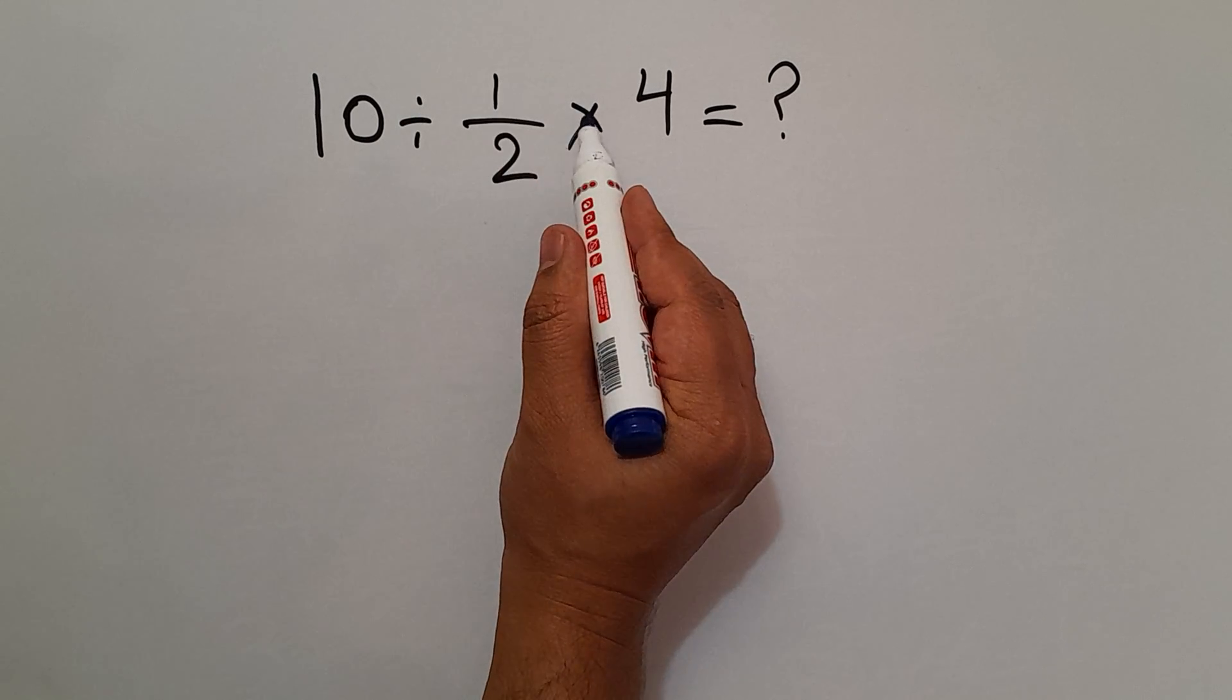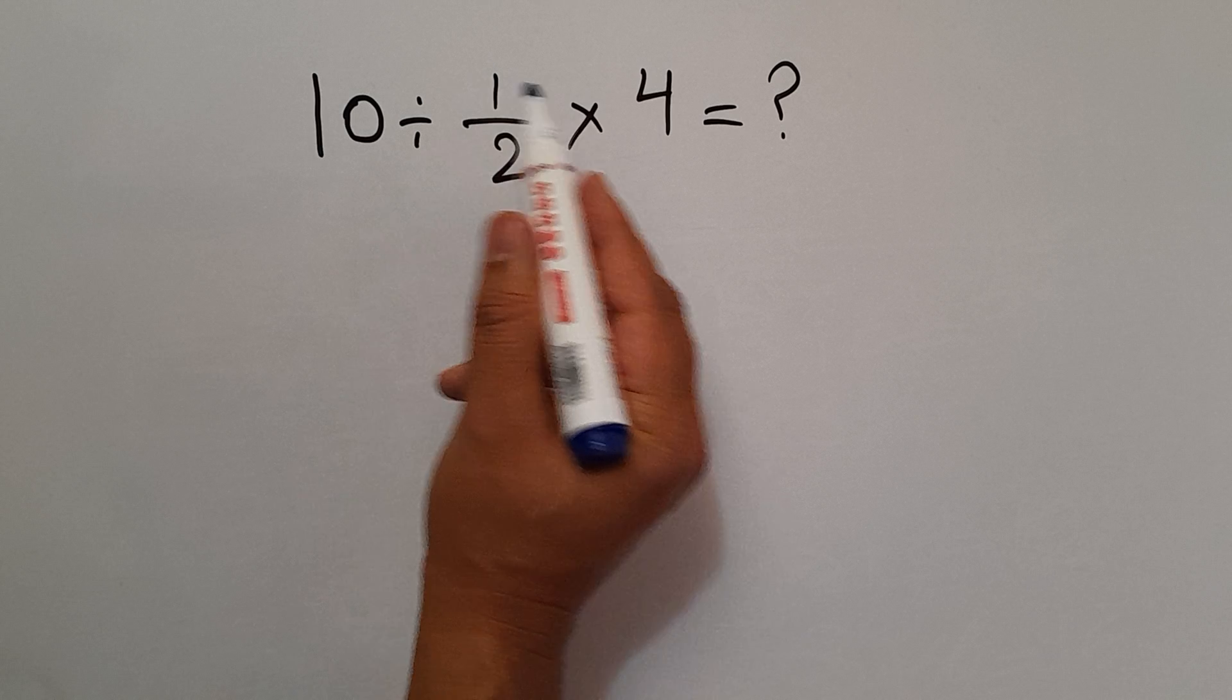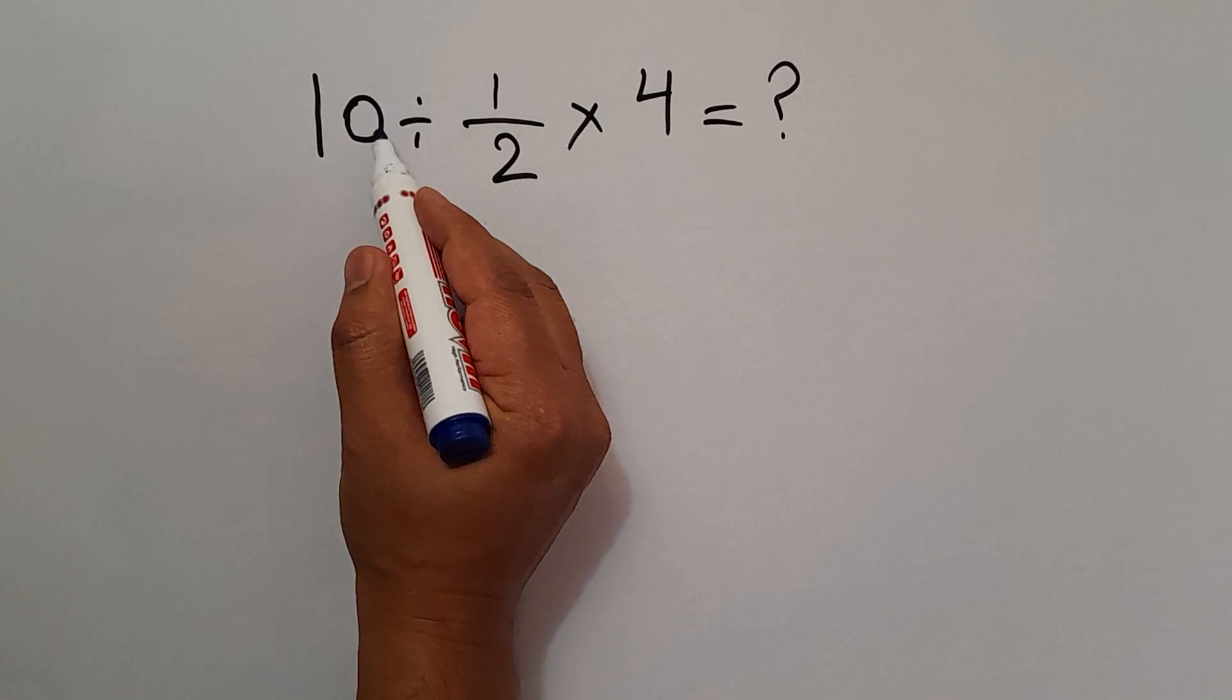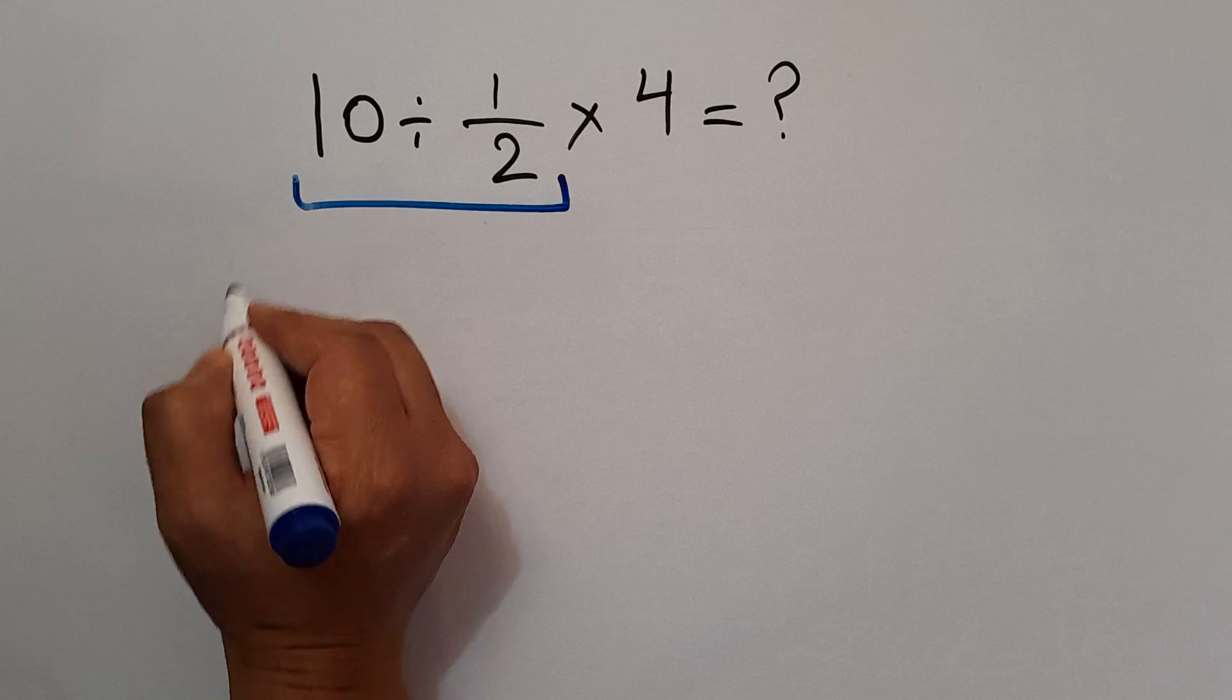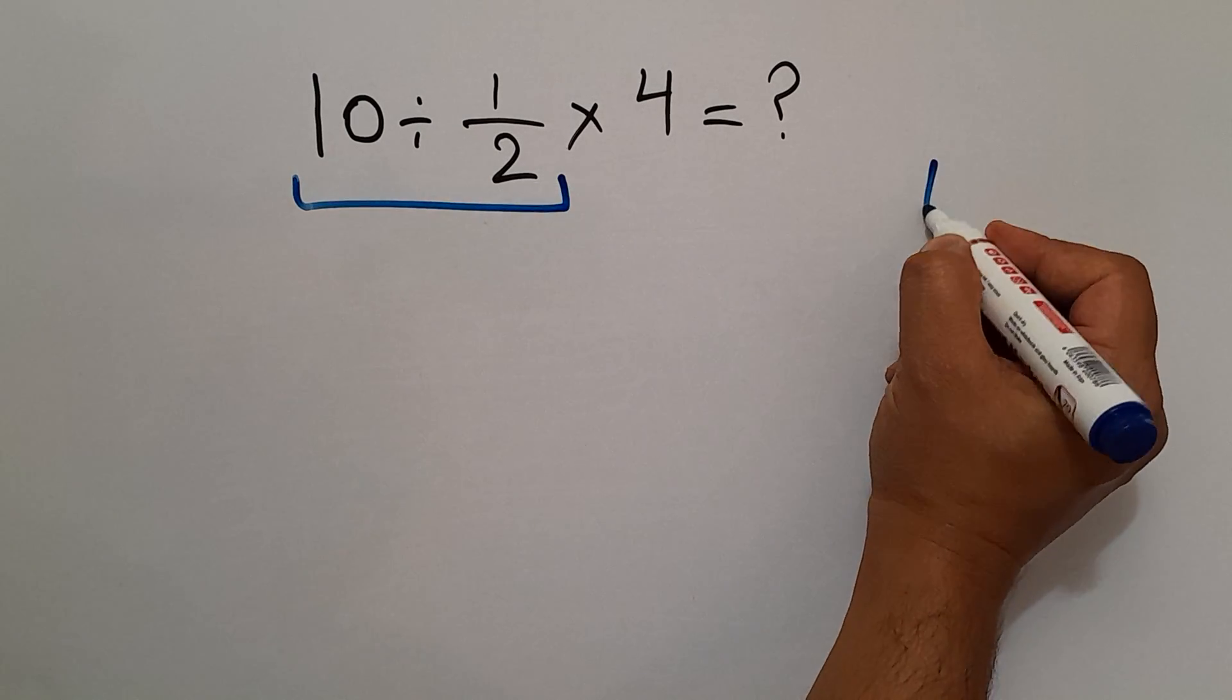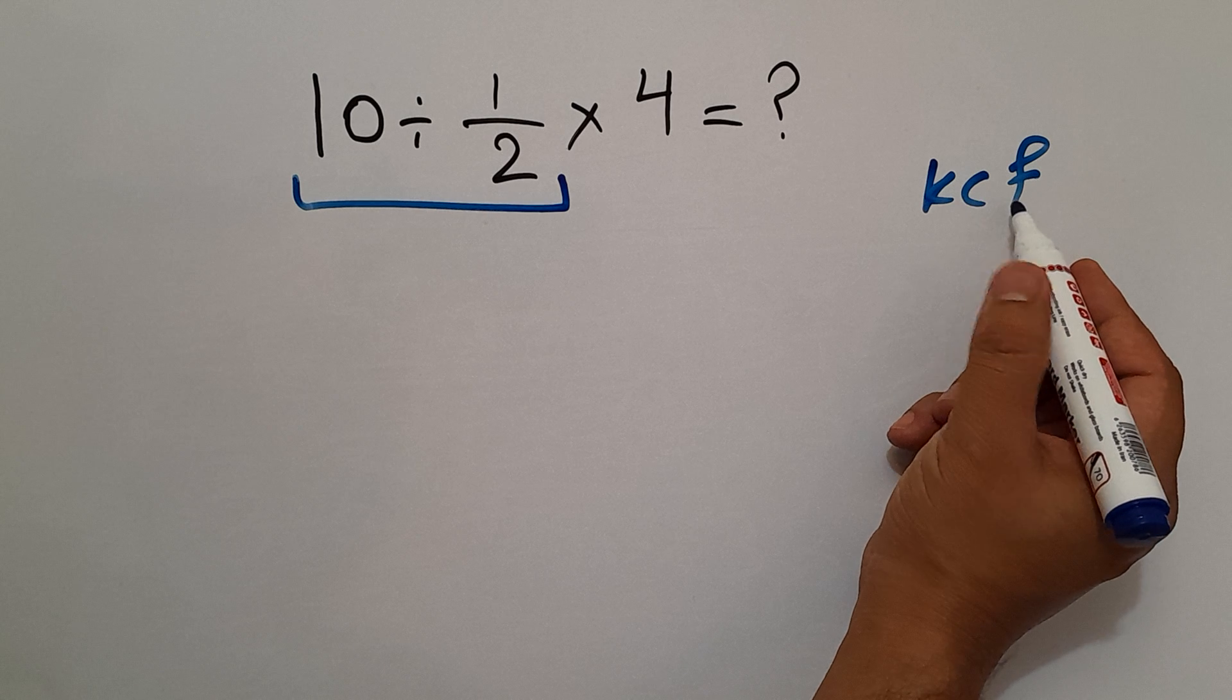As we know, division and multiplication have equal priority and we have to work from left to right. So first, this division: 10 divided by 1 over 2. According to the KCF rule, K stands for keep, C stands for change, and F stands for flip.